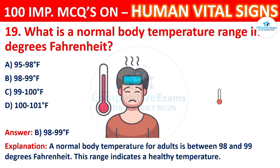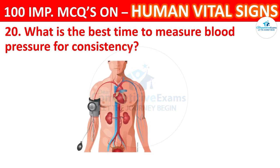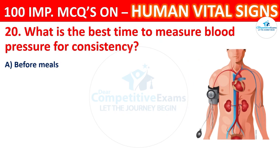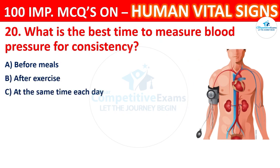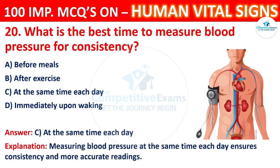Question 20: What is the best time to measure blood pressure for consistency? Options: before meals, after exercise, at the same time each day, or immediately before an appointment. The correct answer is C, at the same time each day. Measuring blood pressure at the same time each day ensures consistency and more accurate readings.